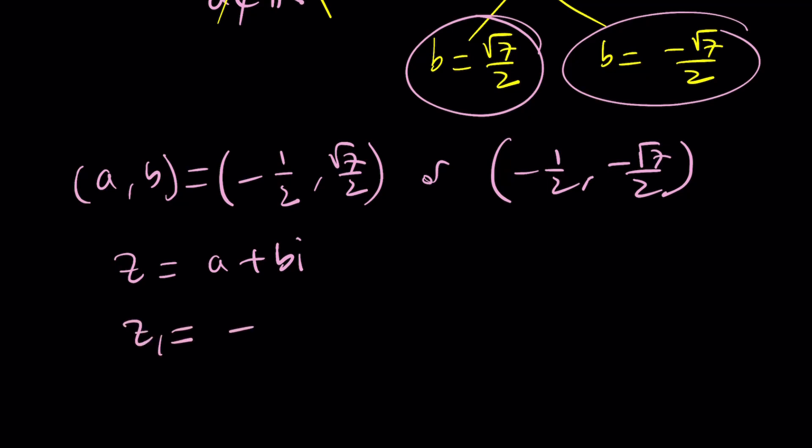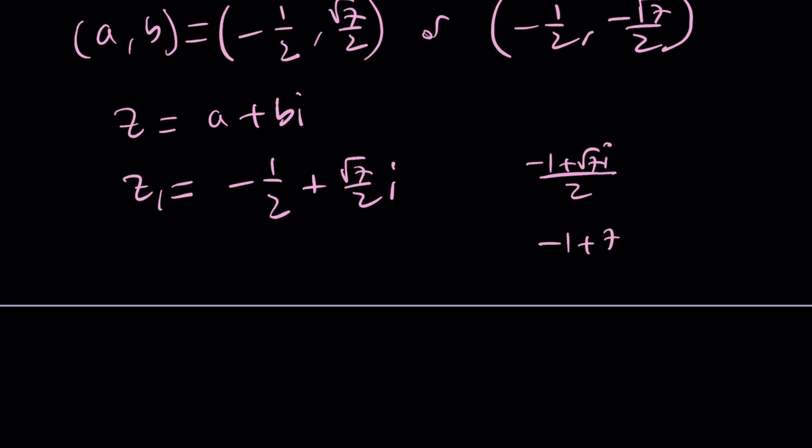And since Z is equal to A plus B I, we can write Z sub 1 as negative 1 half plus root 7 over 2 I. And I know some people are going to write it as negative 1 plus root 7 over 2, but you have to be careful to put the I next to square root of 7. Don't multiply the whole thing by I because these two numbers are very different. So this is Z sub 1 and then Z sub 2 is just going to be the conjugate. And it's kind of interesting because if Z works, Z bar also works. If Z is a solution, Z bar is also a solution. Think about why that would work.